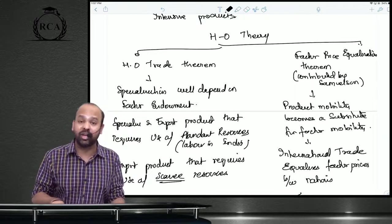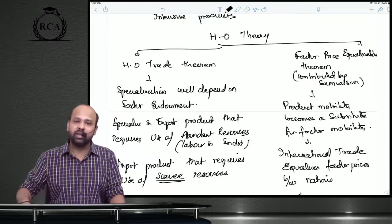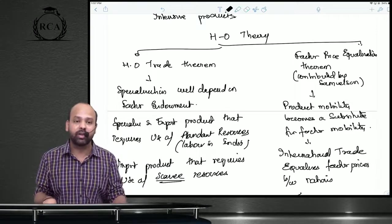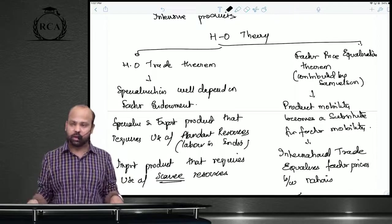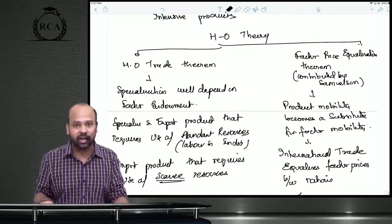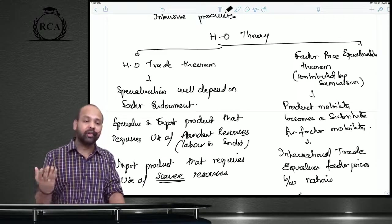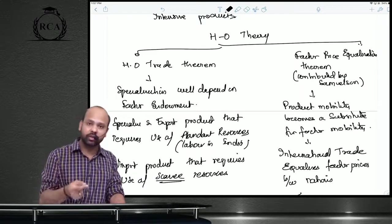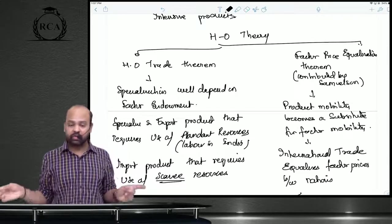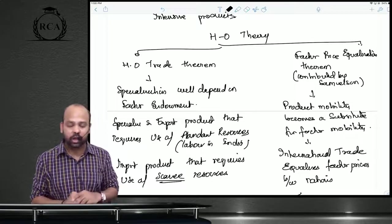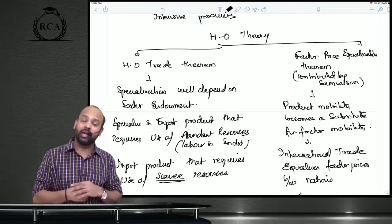If you are a capital-abundant country, manufacture capital-intensive products and export them, importing labor-intensive products. If you are a labor-abundant country, manufacture labor-intensive products and import capital-intensive products. This theory has two components: the HO trade theorem and the factor price equalization theorem (contributed by Samuelson). The factor price equalization theorem states that product mobility becomes a perfect substitute for factor mobility — as a labor-intensive country specializes and increases labor demand, wages rise there, while wages fall in countries that reduce labor-intensive production, equalizing factor prices globally.